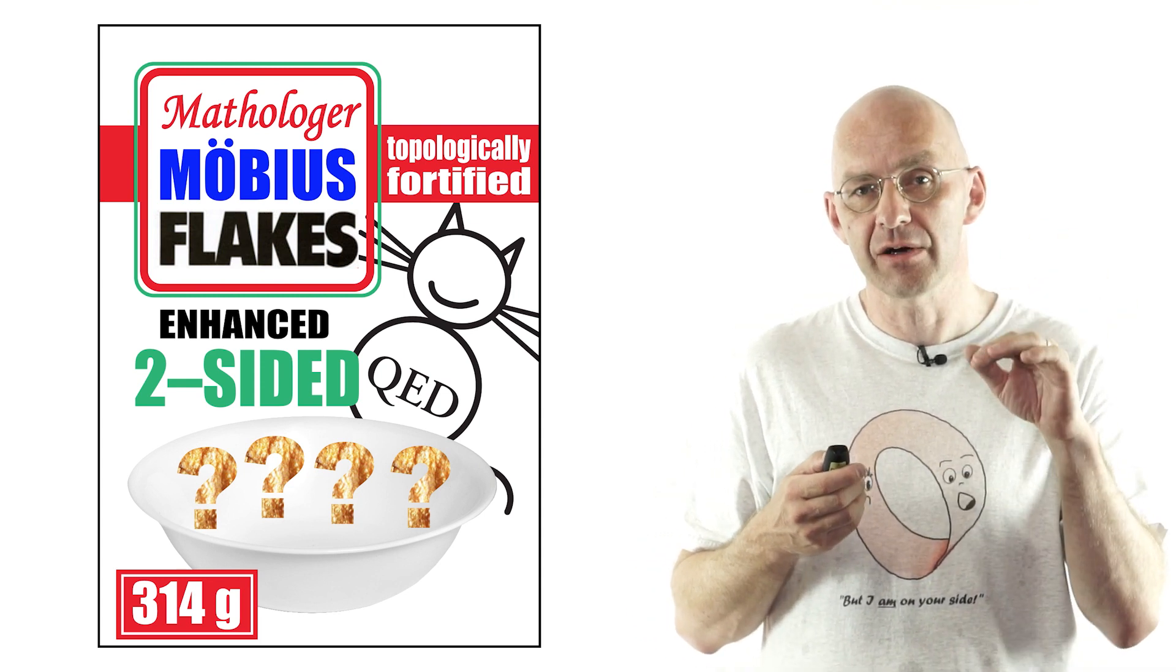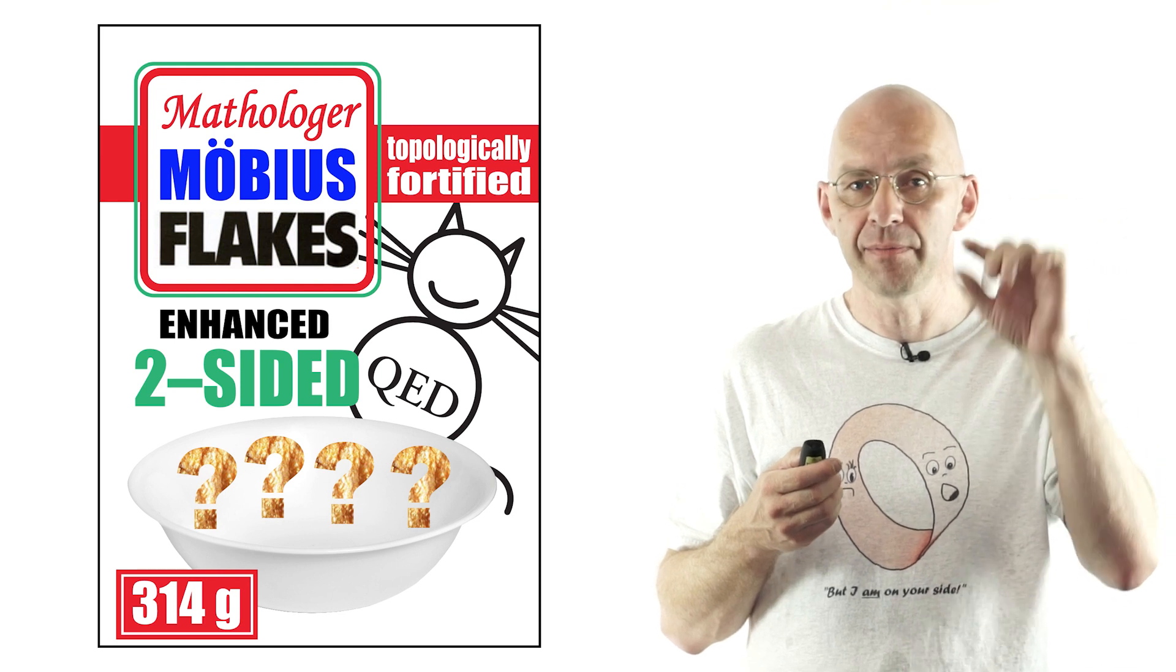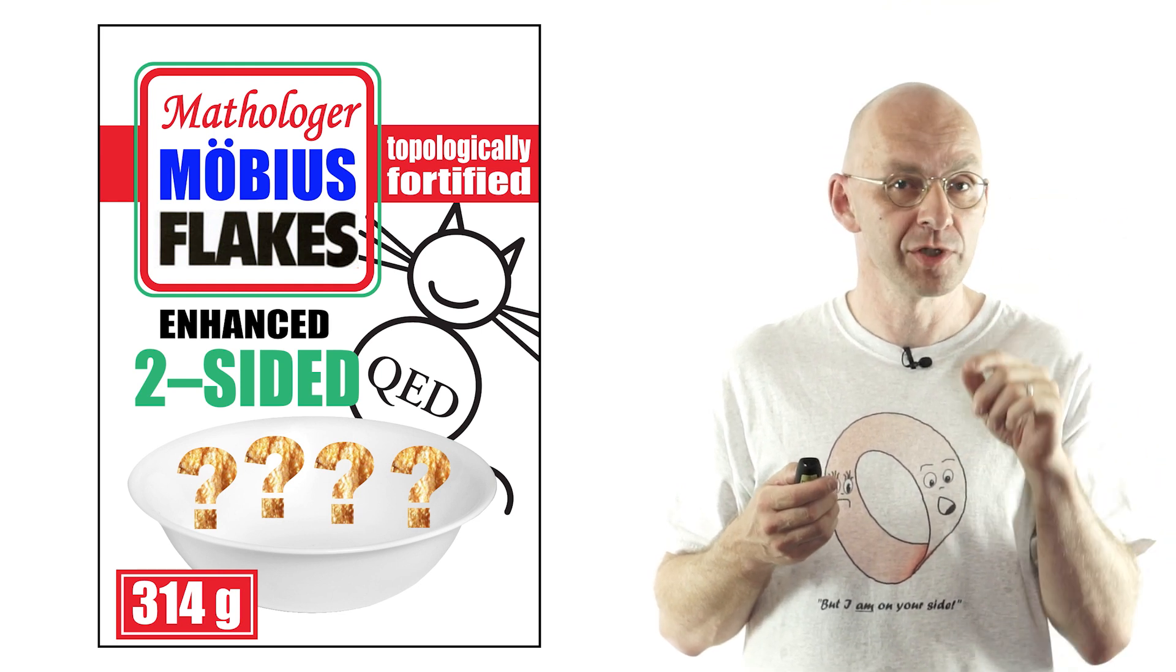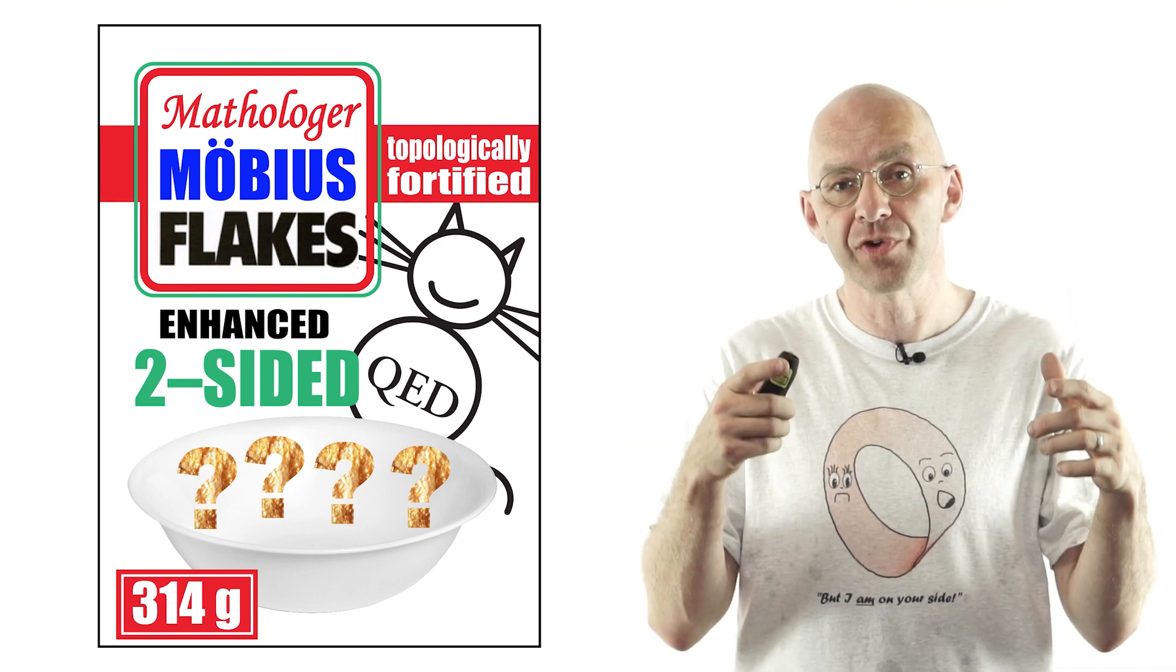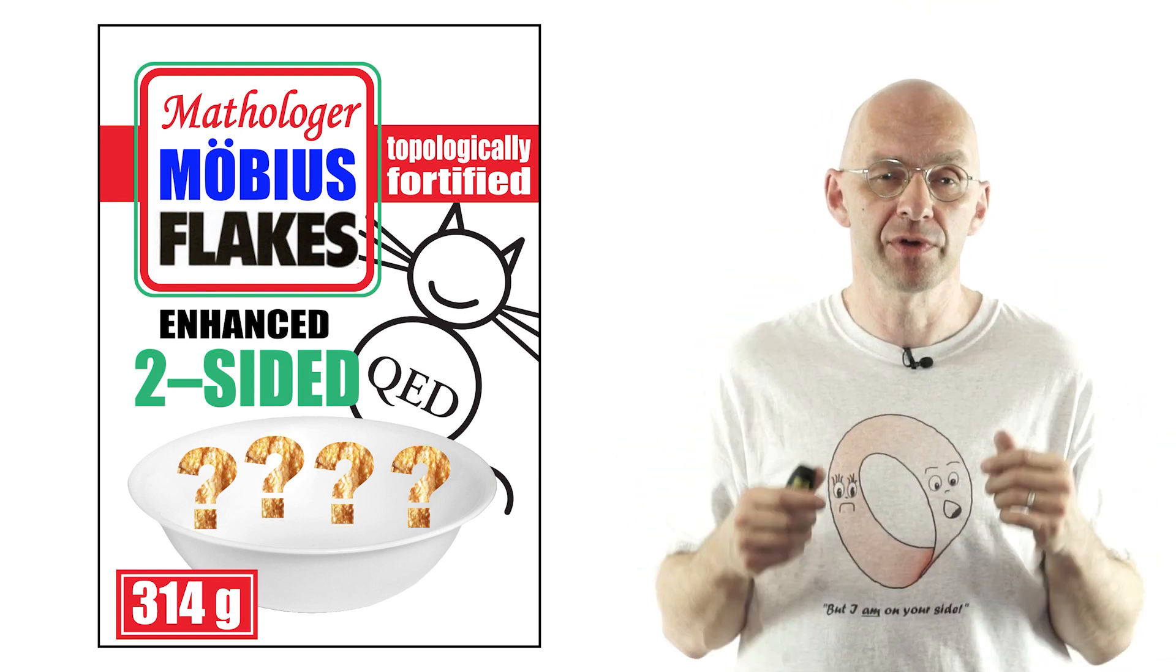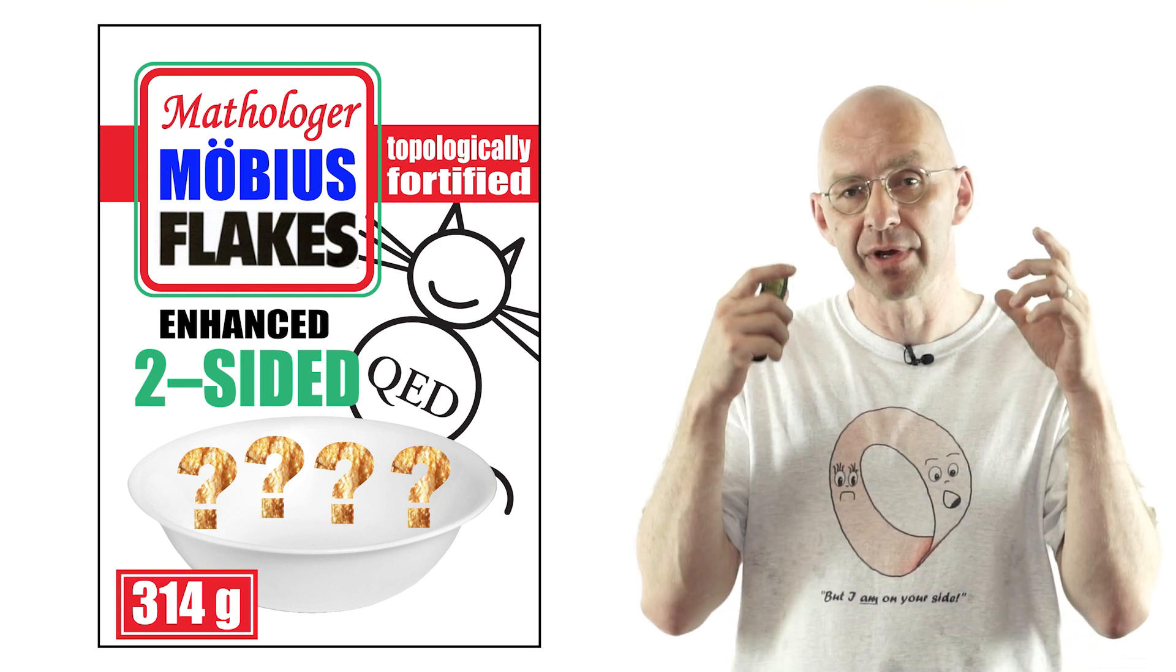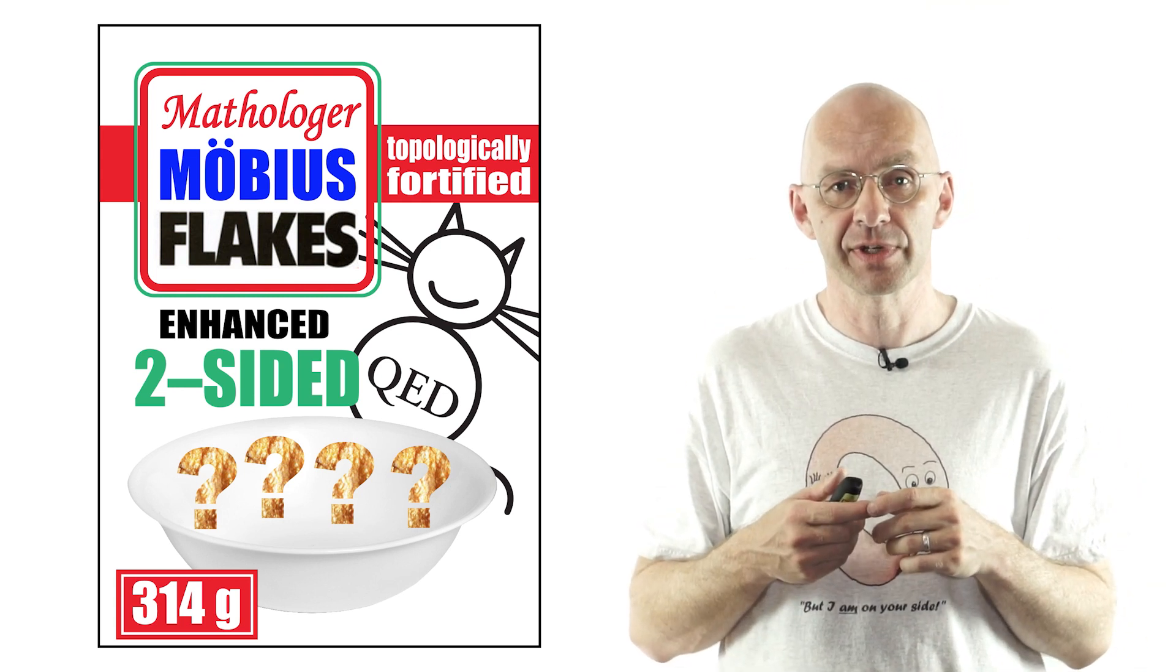Well it turns out that the number of sides of a Möbius strip or actually of any 2D surface depends on which 3D space, which 3D universe it is contained in and how exactly it is contained in this 3D universe.